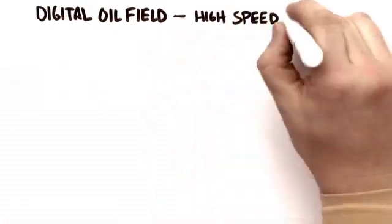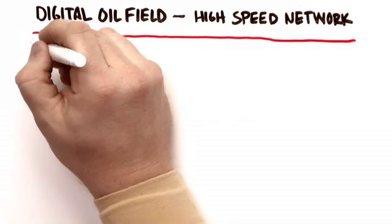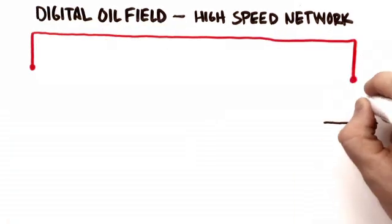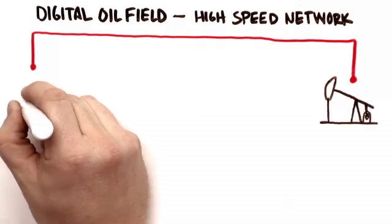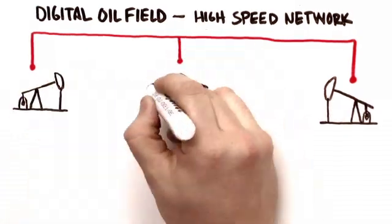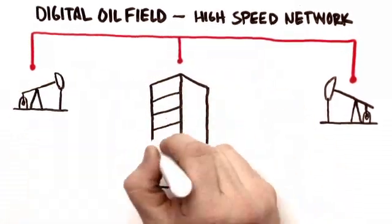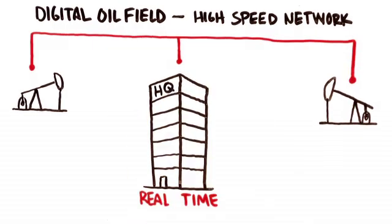Enter the digital oil field powered by a Redline network. With the digital oil field powered by a Redline network, the hundreds of sensors that monitor and control each oil well can send their data to a central location where it can be monitored in real time.